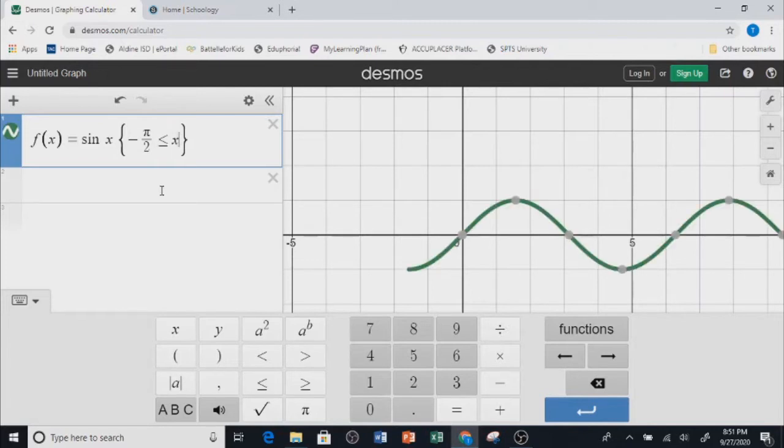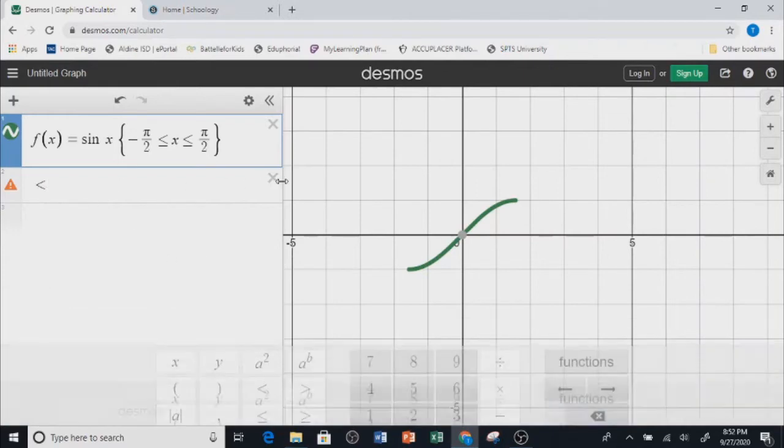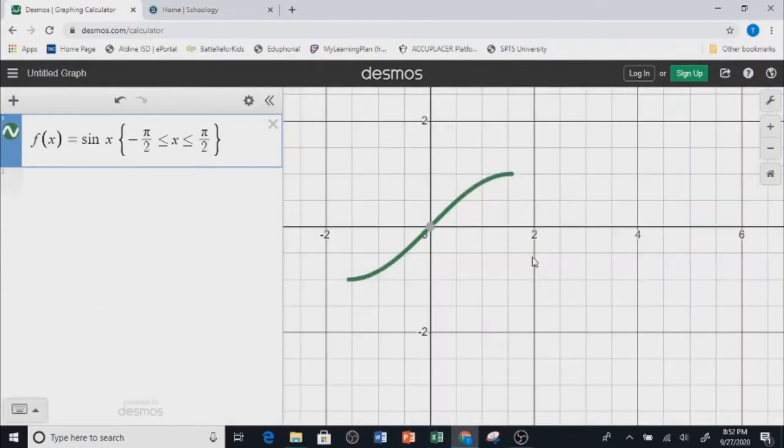which is less than or equal to π. You can either click this π or just type pi. So it will give you the same thing, π/2. That is the restricted domain in this case.